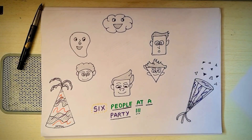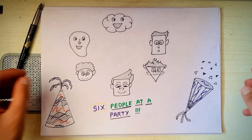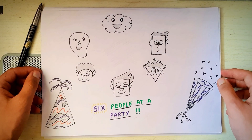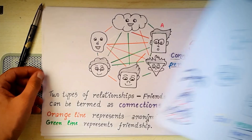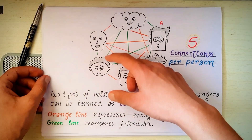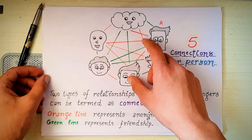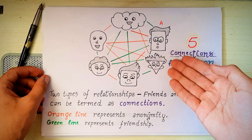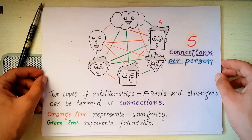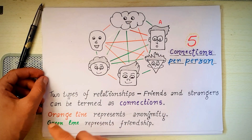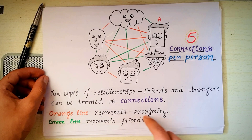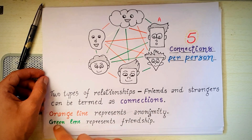Greetings! Suppose you have 6 people at a party, and everyone's either a friend or a stranger to everyone else. When a graph is made depicting this situation, the color of each connecting line represents either friendship or anonymity.